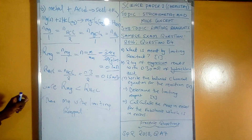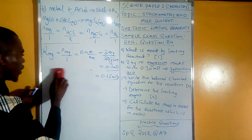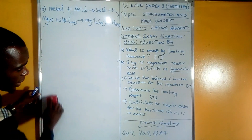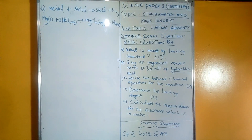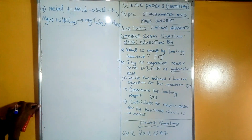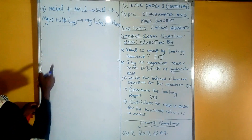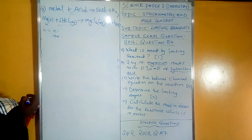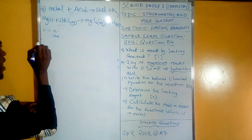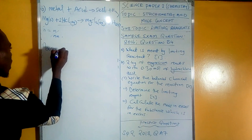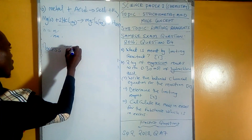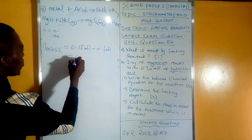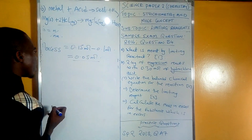The last question asks: calculate the mass in excess for the substance which is in excess. We have already determined that HCl is in excess, since magnesium is the limiting reagent. To find the excess moles, we subtract the two ratio values we found: excess moles = 0.15 moles − 0.1 moles = 0.05 moles. These are the excess moles of HCl.